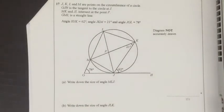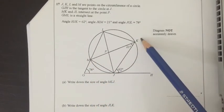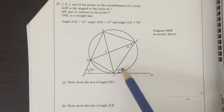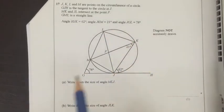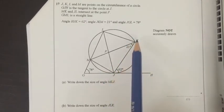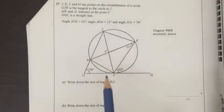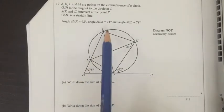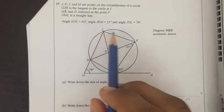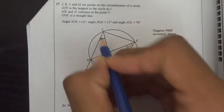Question 17. J, K, L, and M are points on the circumference of a circle. GJH is the tangent to the circle. MK and JL intersect at point P. GML is a straight line. Angle HJK is 62. Angle JKM is 21. And angle JGL is 78. Write down the size of angle MLJ. Angle MLJ. We need this angle. So, there's a theorem that states that angles that hit the circumference from the same points on the arc are equal. So, MKJ and MLJ would be equal because they start and end at the same point and they hit the circumference. So, angle MLJ is 21 degrees.